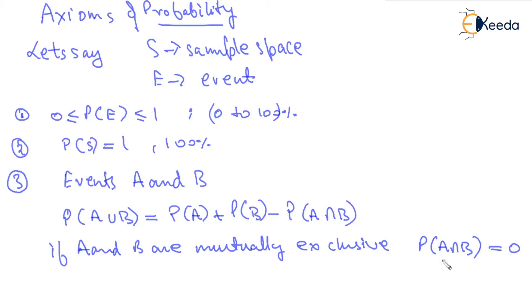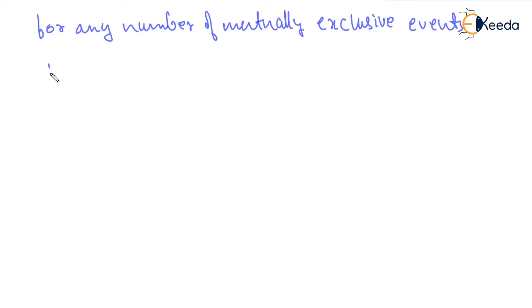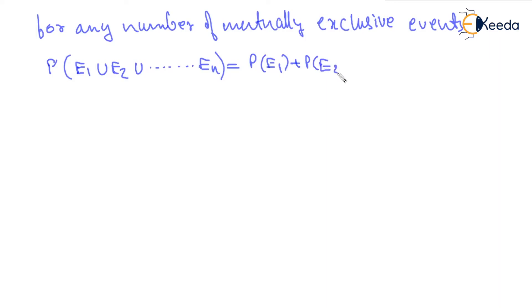A and B are disjoint — there is nothing in common between A and B. So in that case, Probability of A union B directly becomes Probability of A plus Probability of B. For any number of mutually exclusive events, P(E1 ∪ E2 ∪ ... ∪ En) can be directly written as Probability of E1 plus Probability of E2 plus ... plus Probability of En — the sum of all the probabilities.